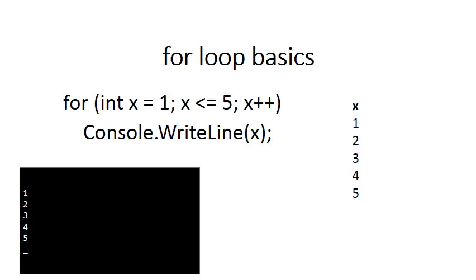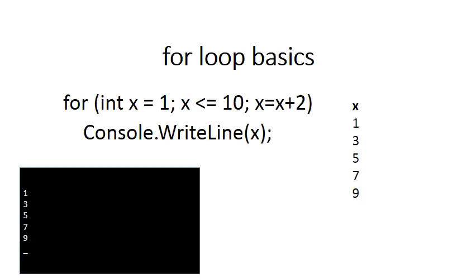The body of the loop will be done five times. X starts off as 1, then becomes 2, then 3, then 4, then 5. Every time the body of the loop executes, the value of X is displayed on the screen, so you will have 1, 2, 3, 4, and 5 displayed. Notice what happens if we change WriteLine to a Write statement — it still displays 1, 2, 3, 4, 5, but they stay on the same line.